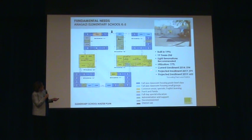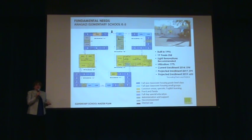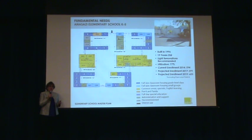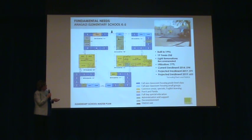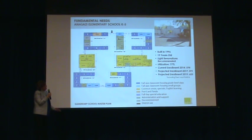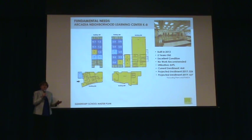The district hired Applied Economics to do a demographic analysis. Applied Economics studied what was going to happen from 2013–2014 all the way up to 2024. We've included the numbers for 2017 and 2019. In the case of Anasazi, projected enrollment for 2017 drops slightly to 591 students, and for 2019 goes up to 605 students. All those numbers include the pre-K and PANDA students for an apples-to-apples comparison.